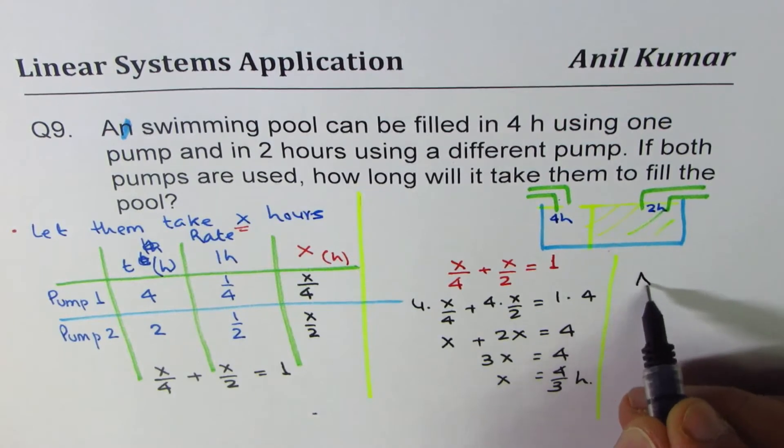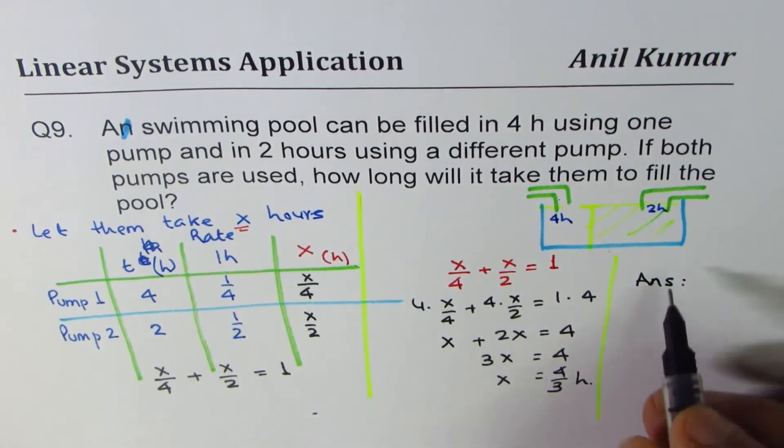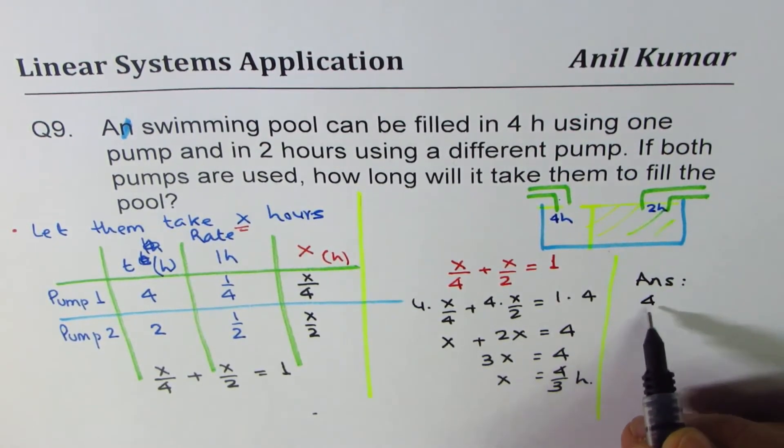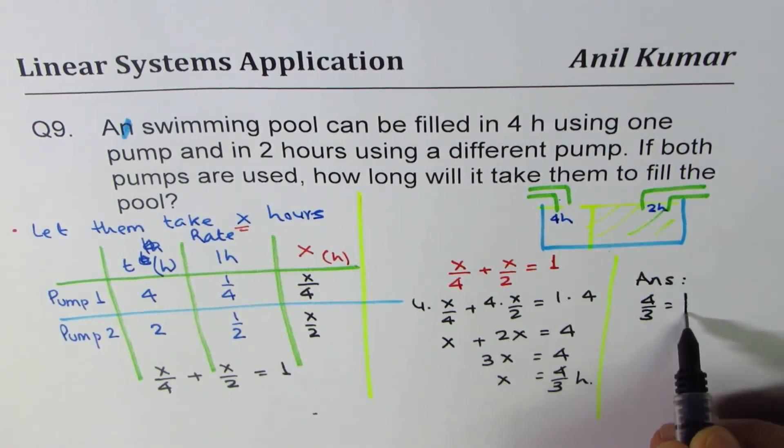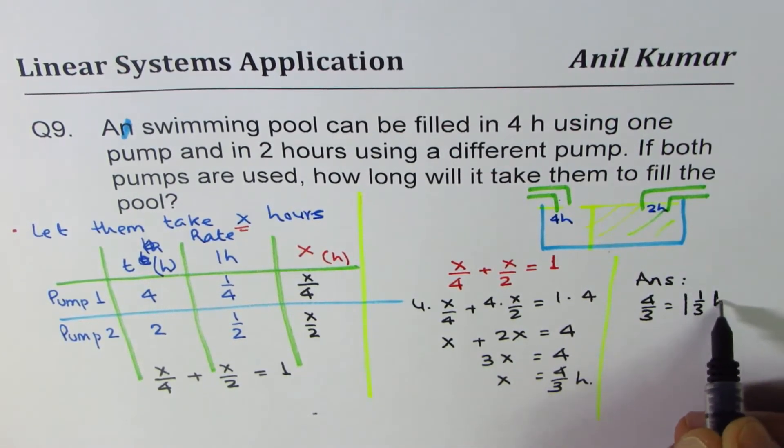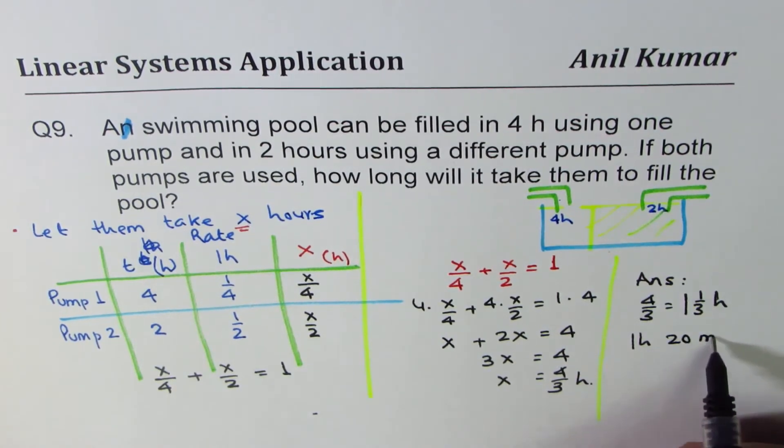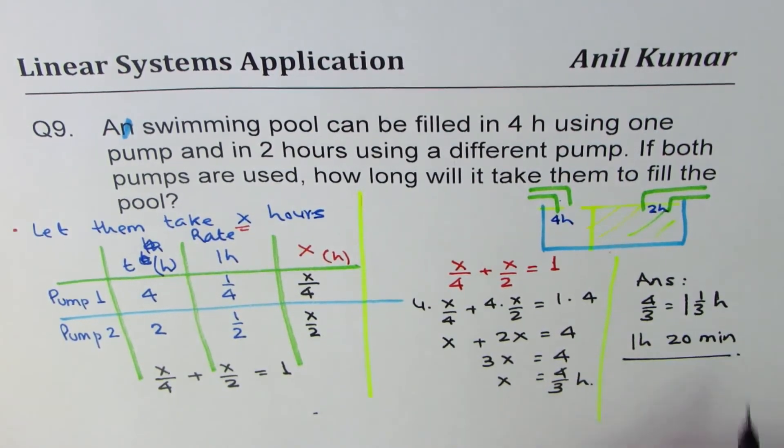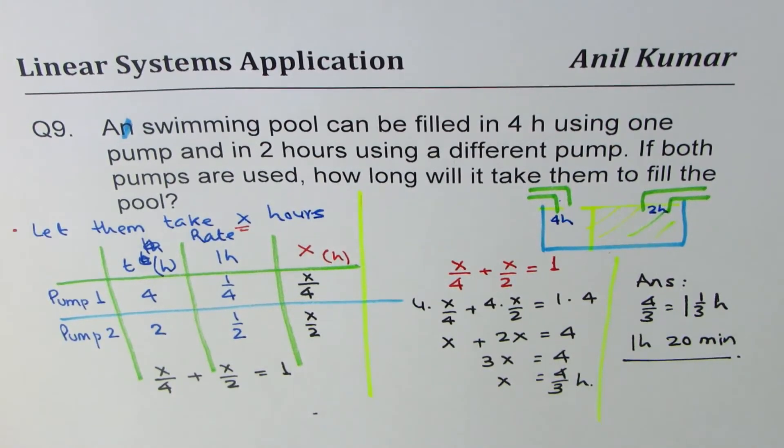So it will take four over three hours. Is it okay? So you can write down your answer as four over three, which is one full and one third of an hour. Is that okay? Or one hour, one third of an hour means 20 minutes. So that could be your answer. One hour, 20 minutes or one and one over three of an hour. So that is how you should be solving this kind of question. I hope that helps. Thank you and all the best.